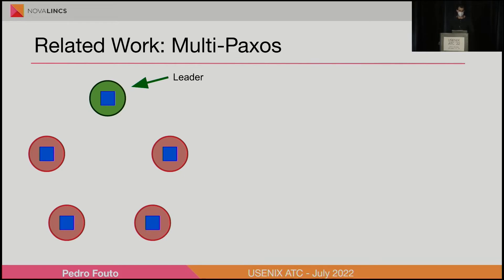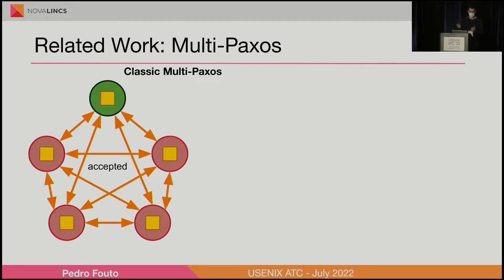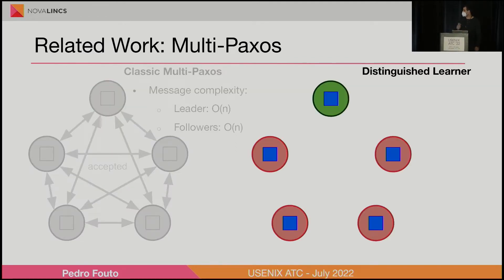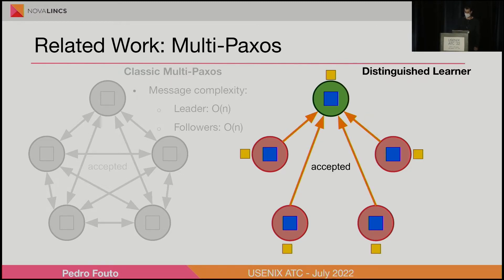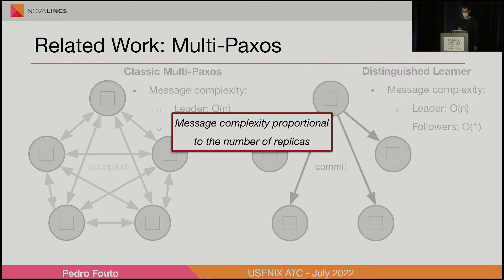Starting with MultiPaxos: we have a leader, and in classic MultiPaxos, skipping the first phase, the leader when it wants to propose something sends to every other replica — in this case that yellow operation — and then every replica broadcasts it to each other. When we have a quorum of accepted messages we can execute the operation. This is a problem in terms of message complexity since it depends on the number of replicas. There are alternatives, for instance the distinguished learner, where followers only need to deal with a single message, but the leader still needs to handle messages proportional to the number of replicas. However, Paxos has something very good: it guarantees safety of consensus in an asynchronous network model.